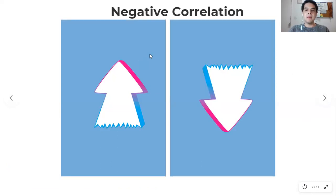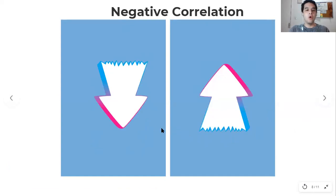When we talk about negative correlation, what does it mean? It means that one variable goes up and the other goes down, or the first goes down and the second goes up.